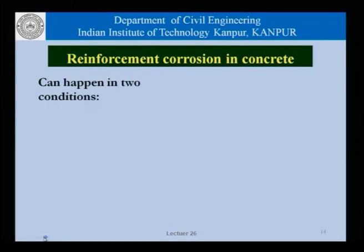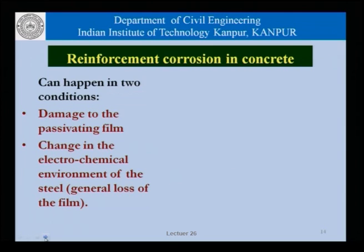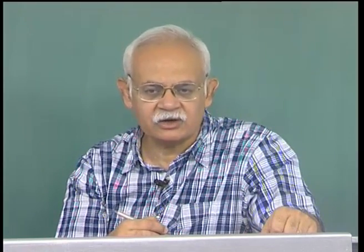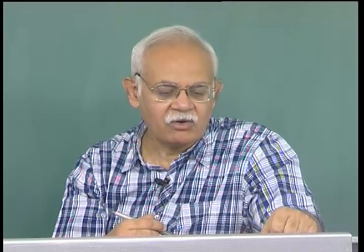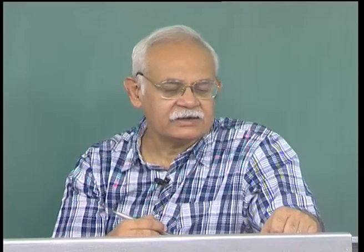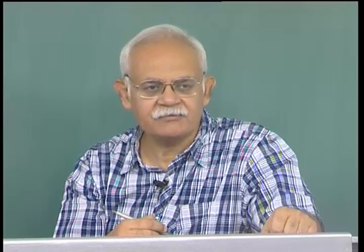It stands to reason therefore that reinforcement corrosion in concrete can happen under two conditions. One is that the passivating film is damaged, and the other is a situation where the electrochemical environment of the steel changes in a manner that the film is no longer tenable. The film is formed because the environment is highly alkaline with a very high pH. If the pH somehow reduces, the passivating film is no longer thermodynamically stable. Once the passivating film is either lost on account of this change or damaged for some reason, the surface of the reinforcement is exposed to oxygen and water action present in concrete and we have the onset of corrosion.